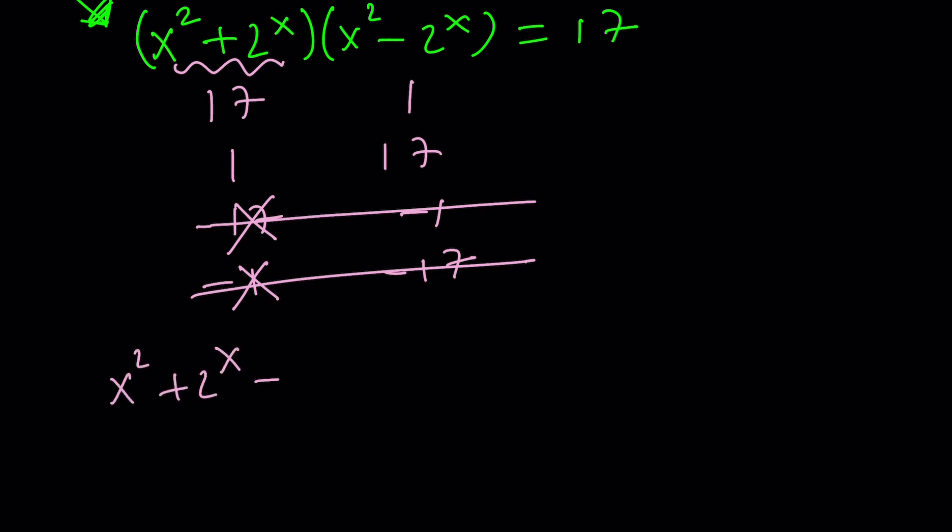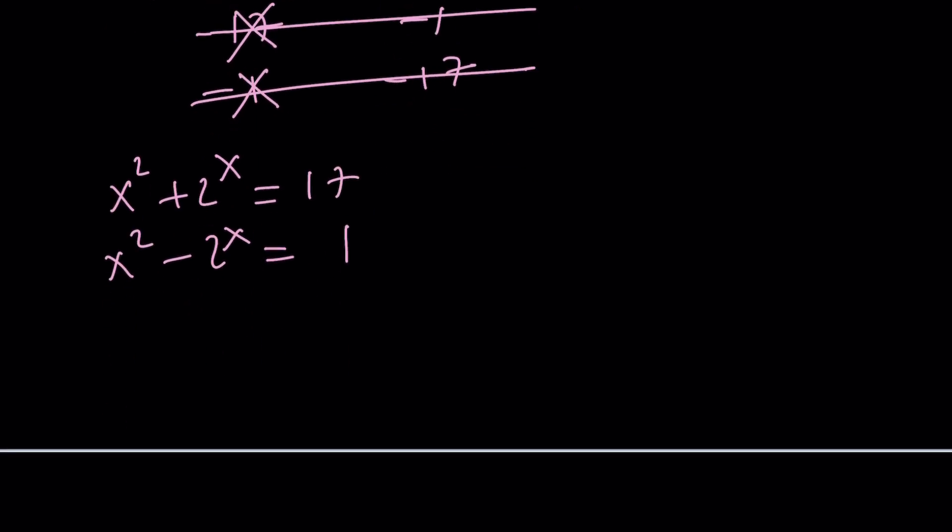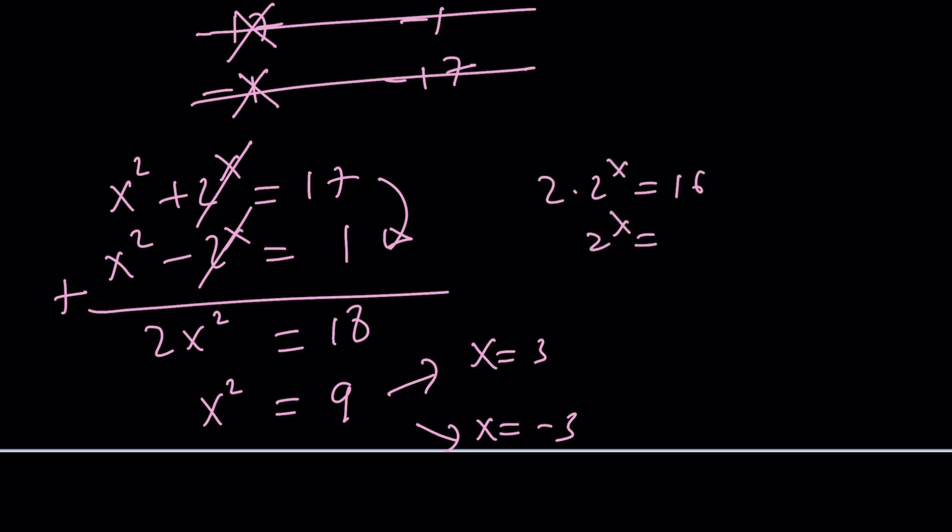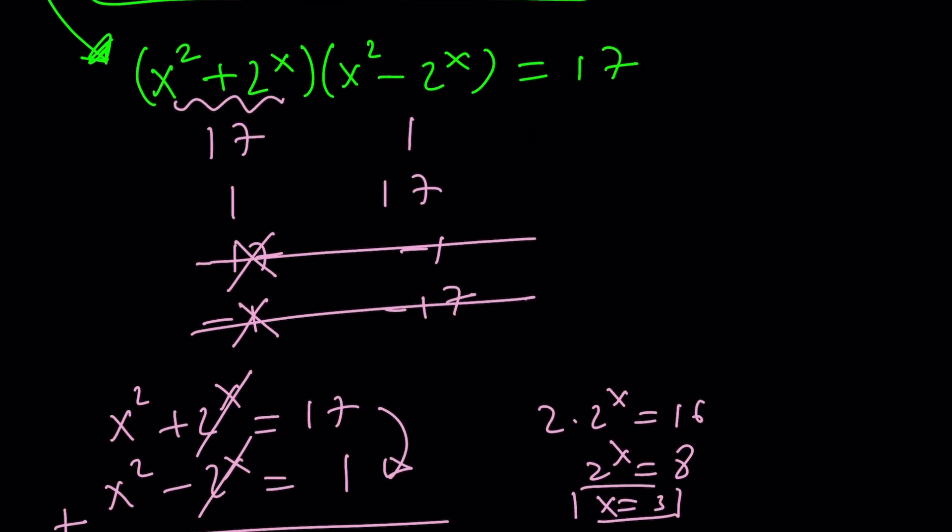What about the other ones? For example, if x squared plus 2 to the power of x is 17, and x squared minus 2 to the power of x is equal to 1. By the way, this gives you a really nice system. You don't even have to guess and check, you can just solve it. This gives us 2x squared equals 18 and x squared equals 9. This gives us two integer solutions: x equals 3 or x equals negative 3. But here's the thing. If you subtract these equations, you will get 2 times 2 to the x equals 16, which is 2 to the x equals 8, which means x equals 3. So when you look at the intersection, you only get one solution.